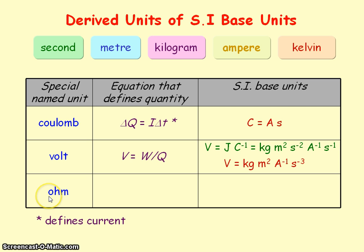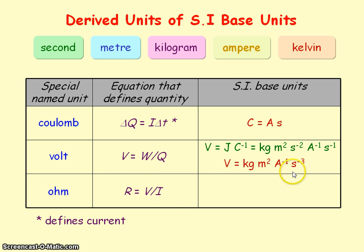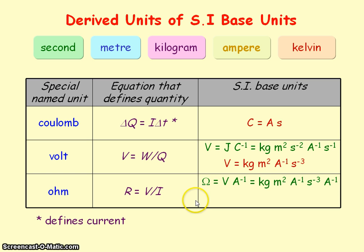Finally, the ohm is the unit of resistance, and resistance equals voltage divided by current. So the ohm equals the units of voltage divided by the units of current — amperes — giving volts per ampere. Substituting for the volt to get ohms into SI base units, the ohm is equal to kg meters squared per ampere squared per second cubed.